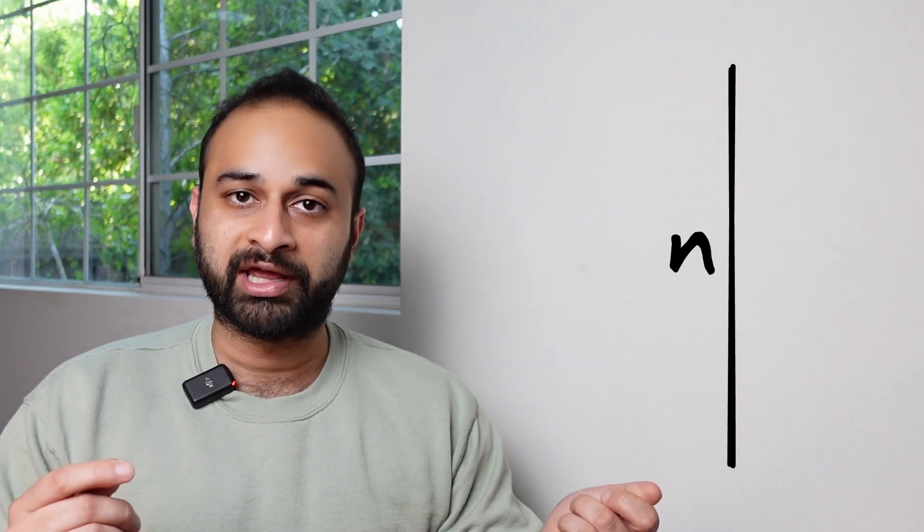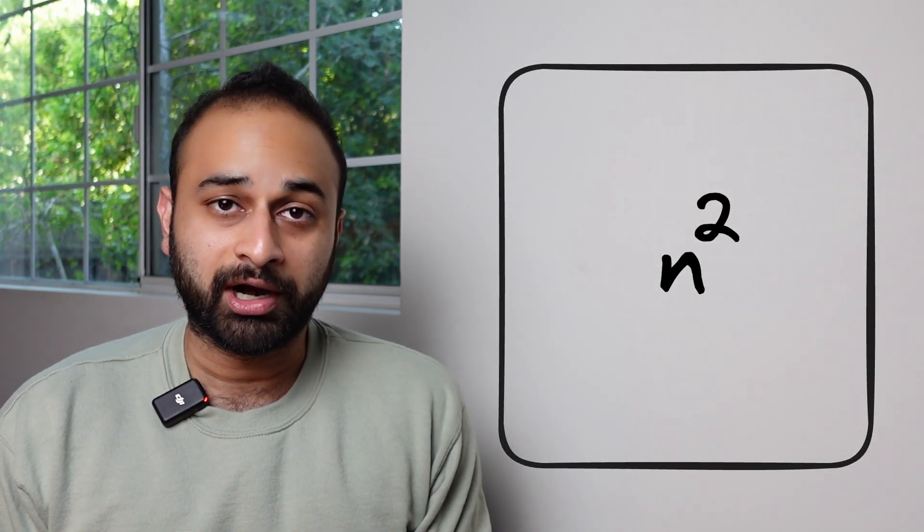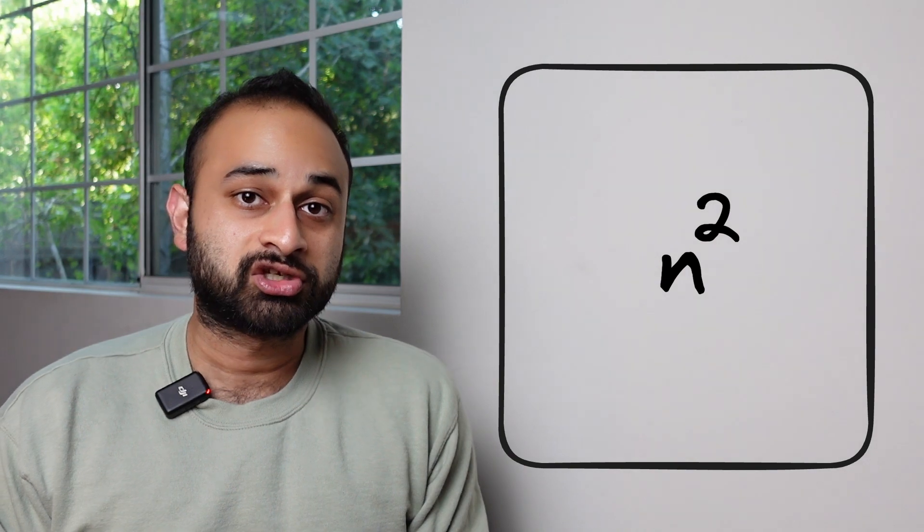When we learn mathematics, we learn a lot about how it's the study of patterns and how some pattern generalizes from n equals one to n equals two to n equals three and so on. In one dimension we can talk about line segments of length n. In two dimensions, if we take two line segments of length n we can connect them together to get a square of area n squared.